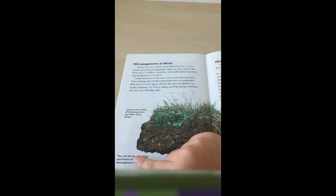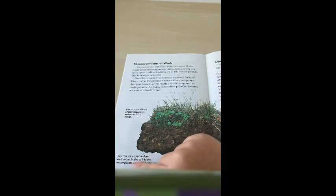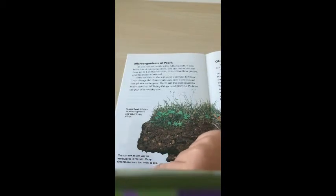Topsoil holds billions of microorganisms and other living things. You can see an ant and an earthworm in the soil. Many decomposers are too small to see.